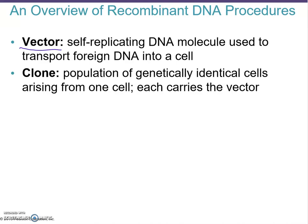A clone, by definition, is a population of genetically identical cells arising from one cell. For example, if you insert a plasmid containing the information for human insulin into E. coli, the E. coli cell that picks up that plasmid copies it every time it reproduces — that is a clone of E. coli now capable of producing human insulin.